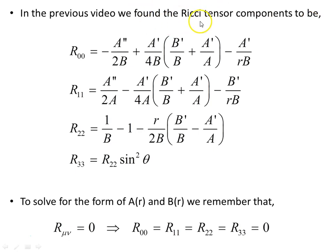In the previous video we found the Ricci tensor components to be R00 is this object, R11 is this one, R22 is that, and R33 is this. Now to solve for the form of A(r) and B(r), we remember that the Ricci tensor was zero in the region outside the mass distribution, and that meant that each of these Ricci tensor components are also zero.